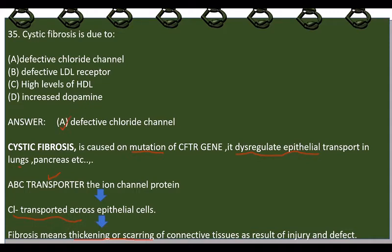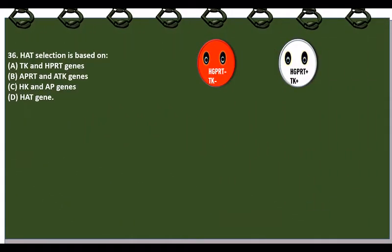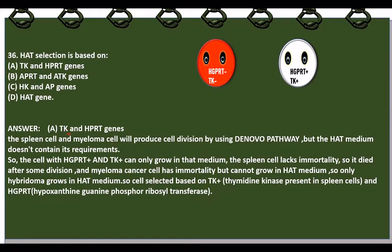Next: HAT selection is based on? The answer is TK and HPRT gene. The spleen cell (HGPRT-positive and TK-positive) and the myeloma cell (HGPRT-negative and TK-negative) produce cell division using the de novo pathway, but HAT medium does not allow de novo pathway. So only cells with HGPRT-positive and TK-positive — the spleen cells — can grow. Spleen cells lack immortality and die after some divisions, while myeloma cells have immortality but cannot grow in HAT medium. Therefore only the hybridoma cell grows in HAT medium, selected based on thymidine kinase (TK) and HGPRT genes.